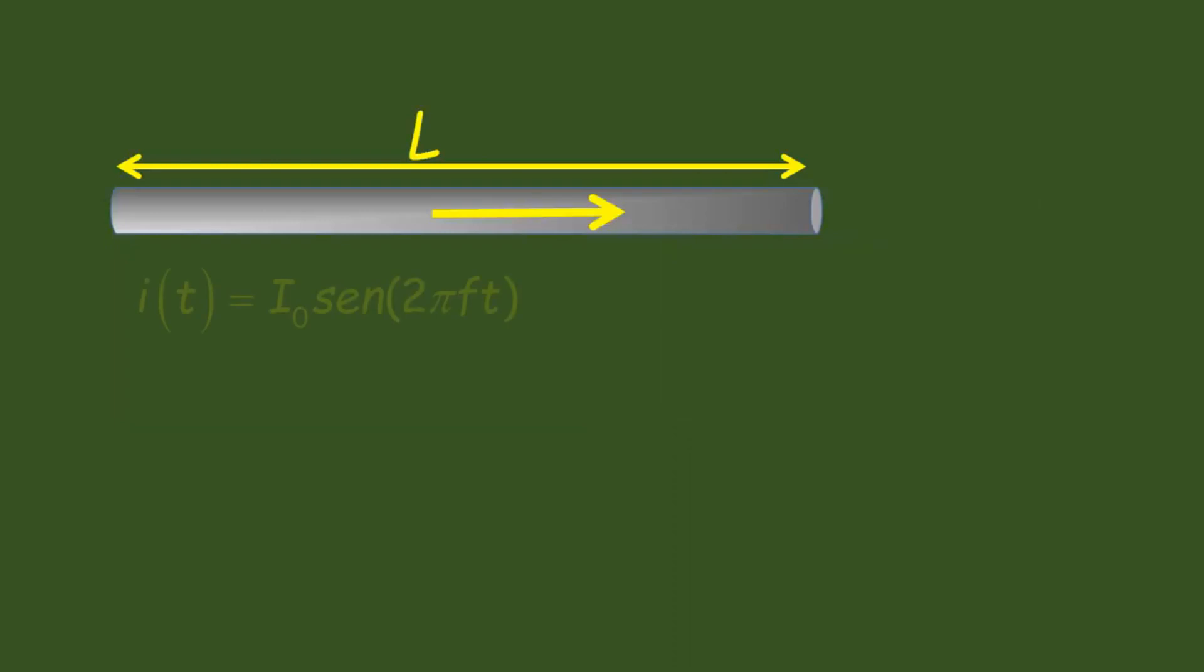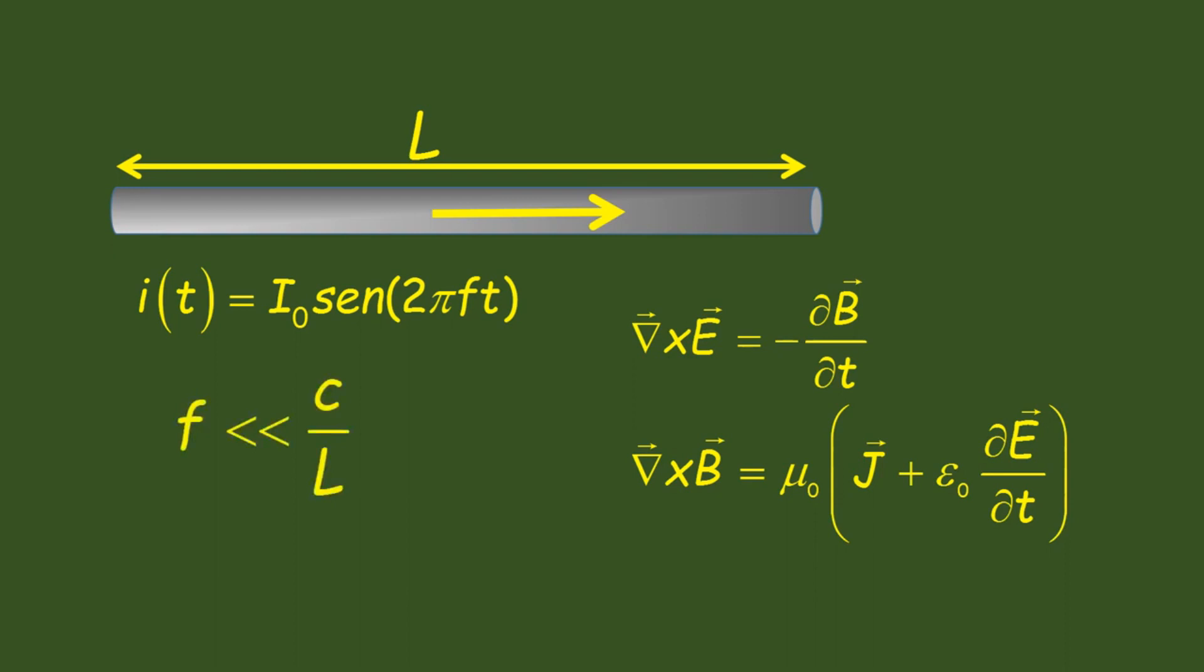When the dimensions of the circuit are small and use low frequencies, the delay of electromagnetic disturbances in the region can be neglected. In these conditions, even though the fields are slowly variable, static equations can be used.